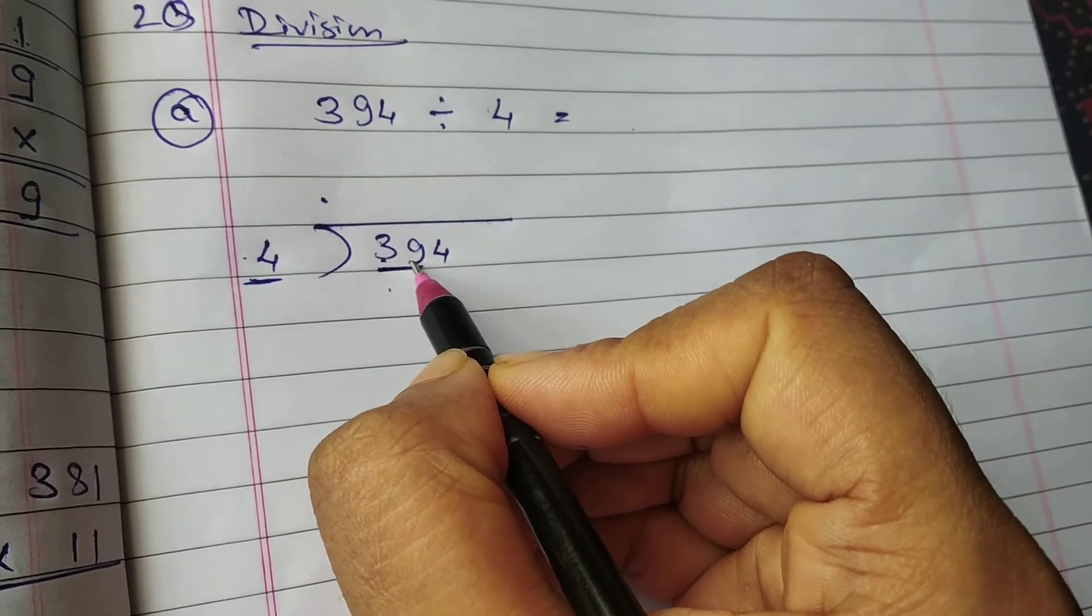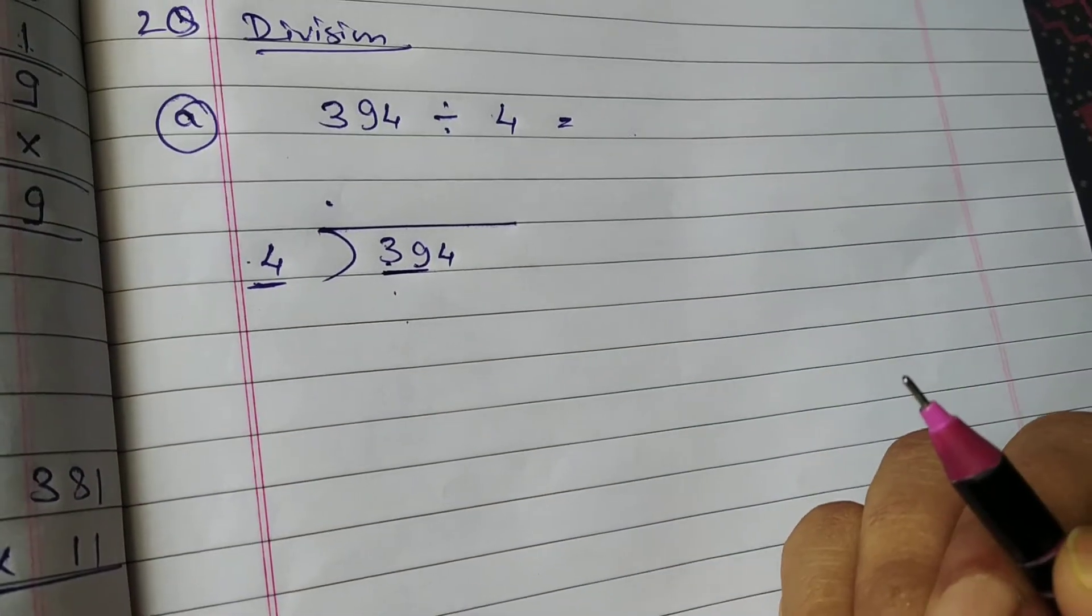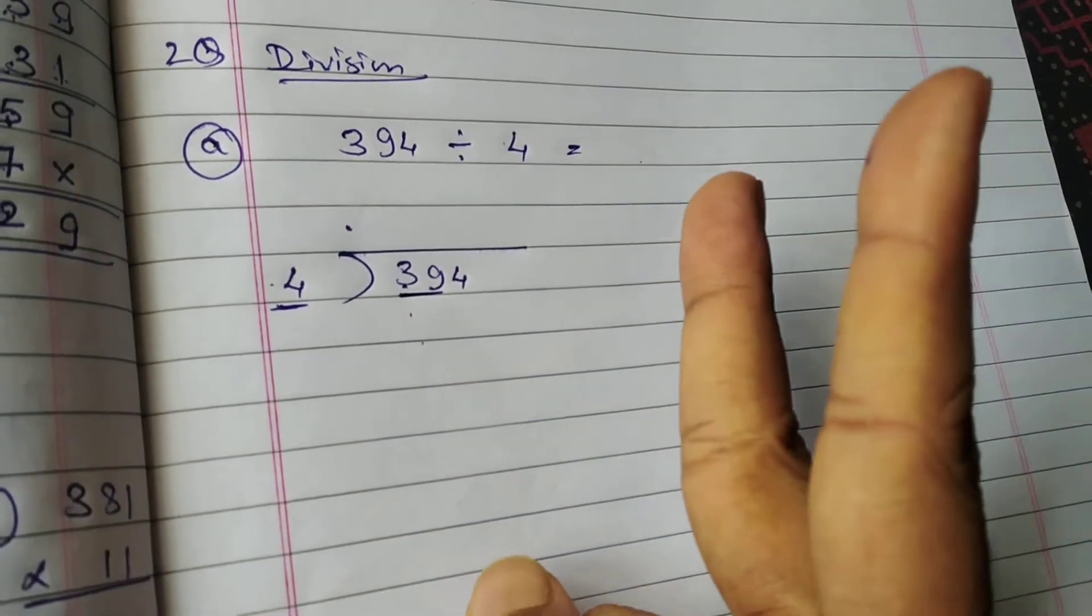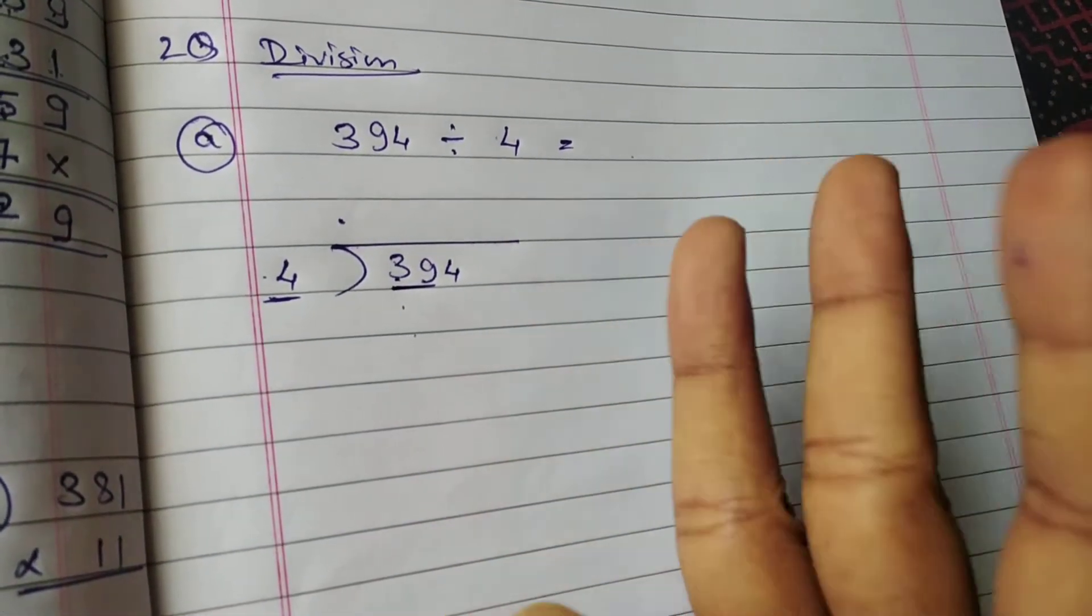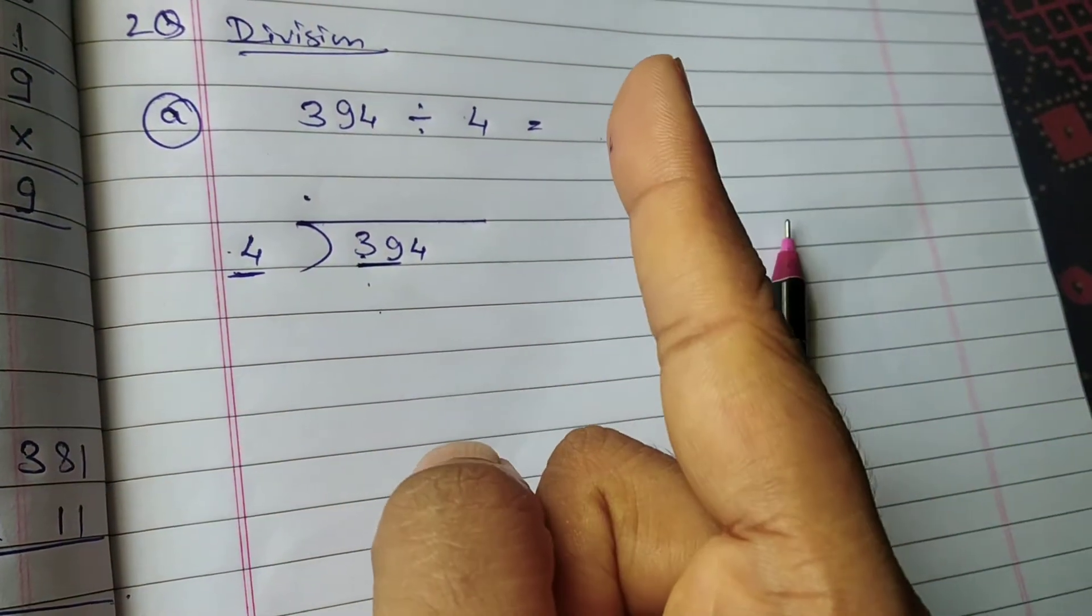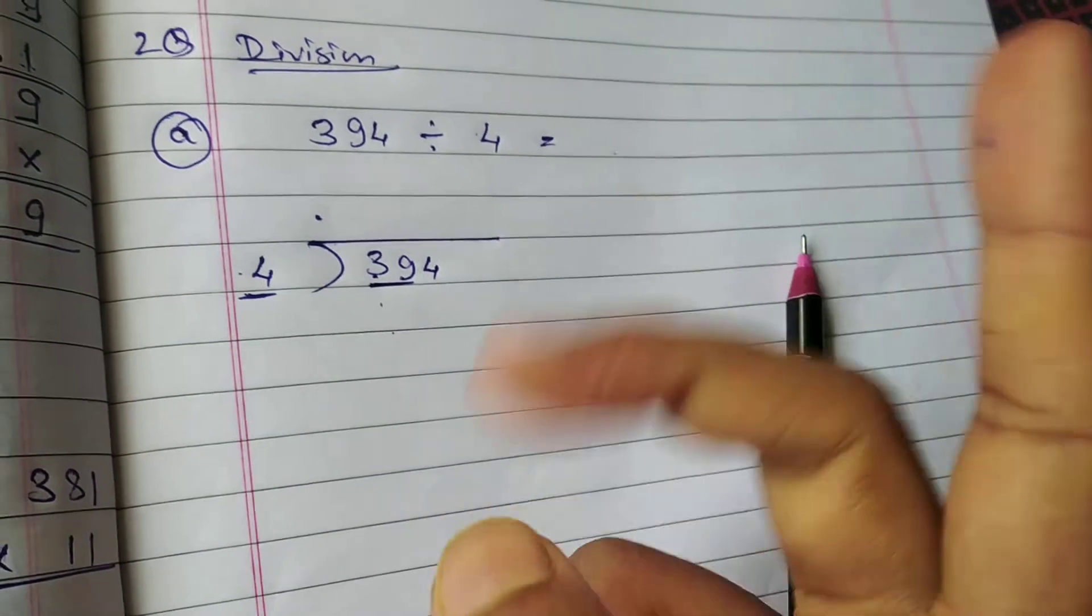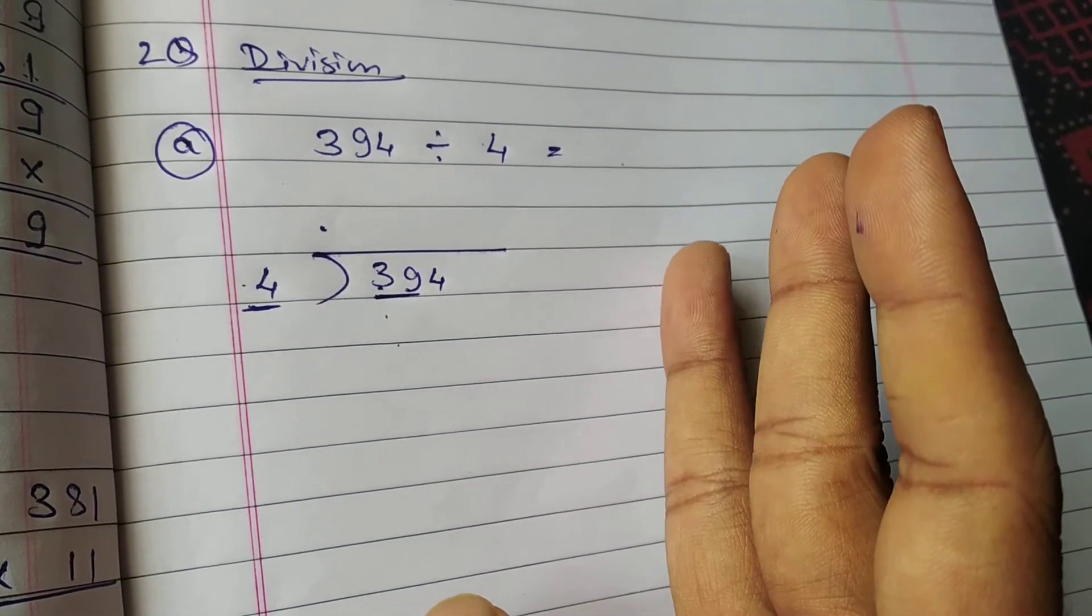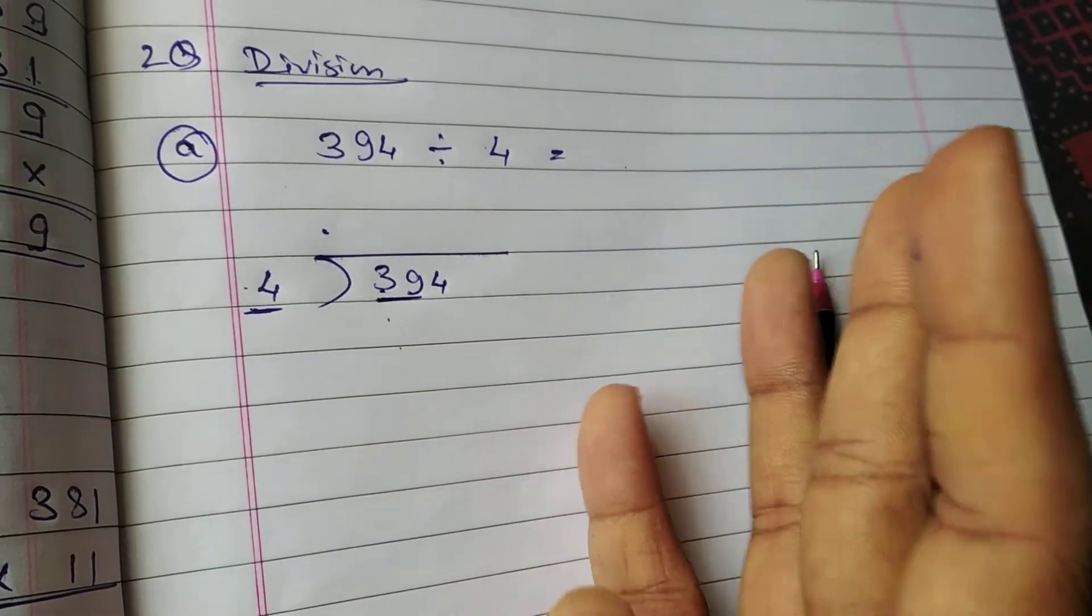4 threes are 12, 4 fours are 16, 4 fives are 20, 4 sixes are 24, 4 sevens are 28, 4 eights are 32, then 4 nines are 36.